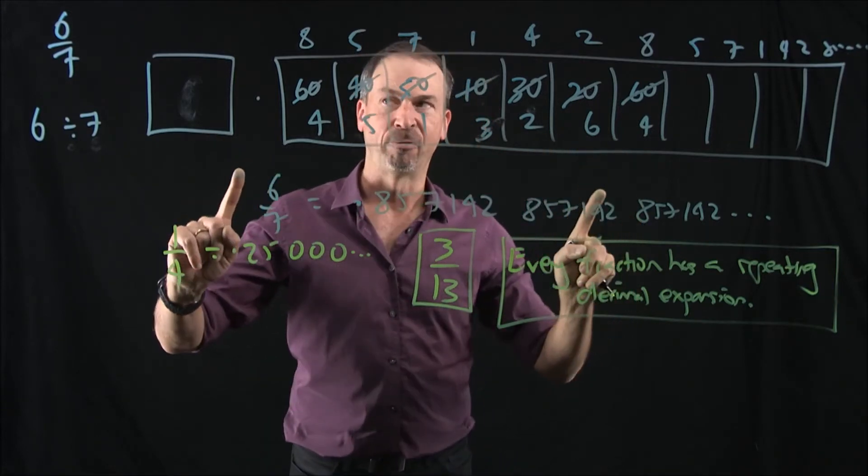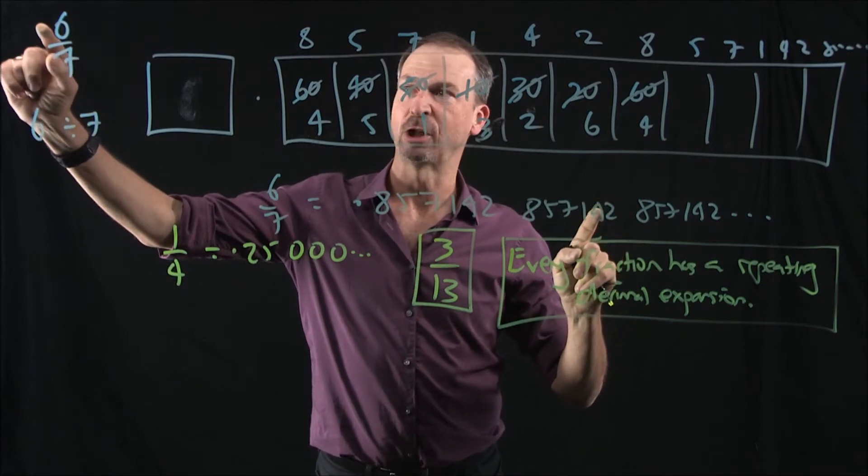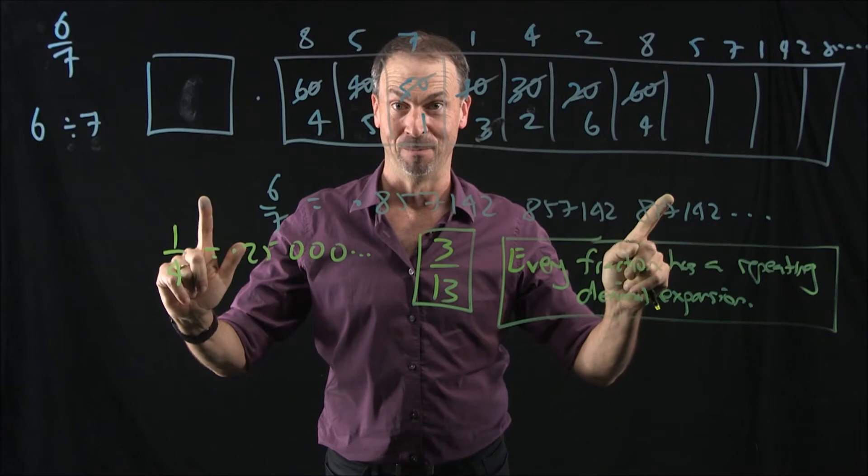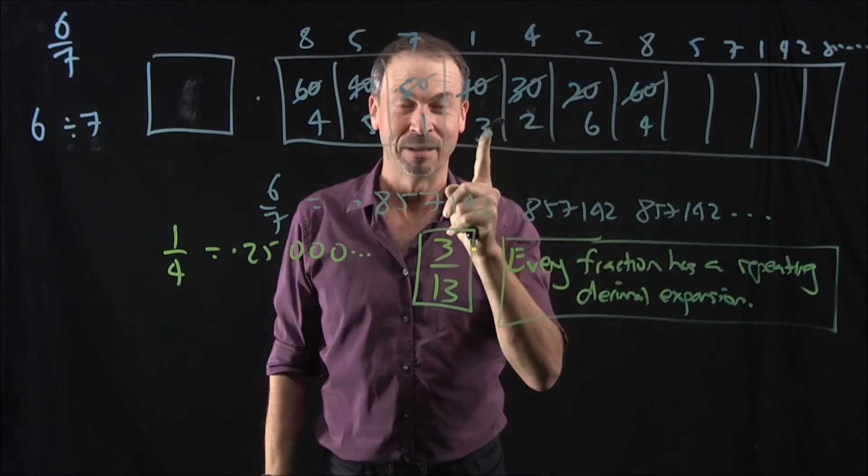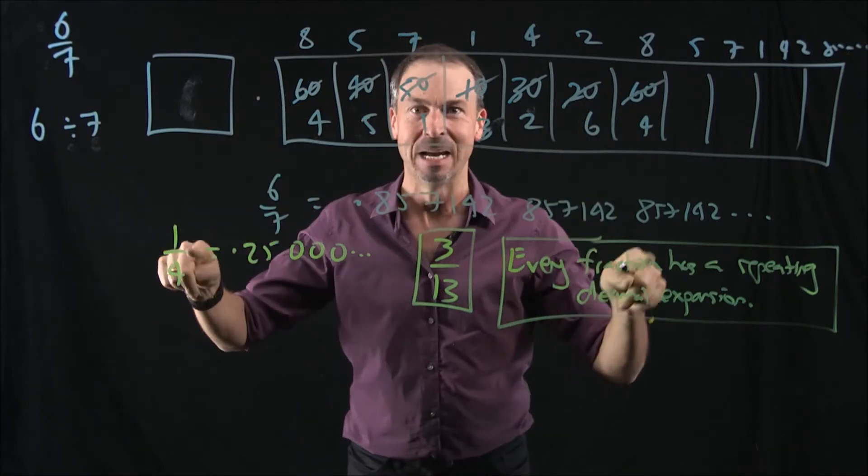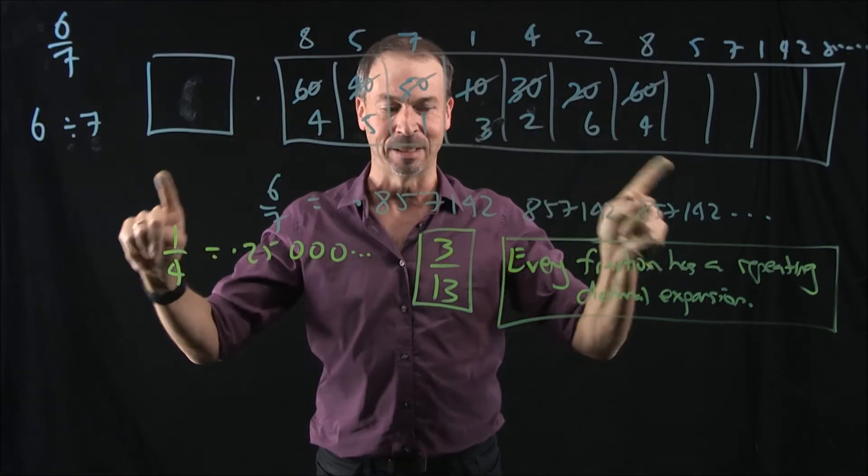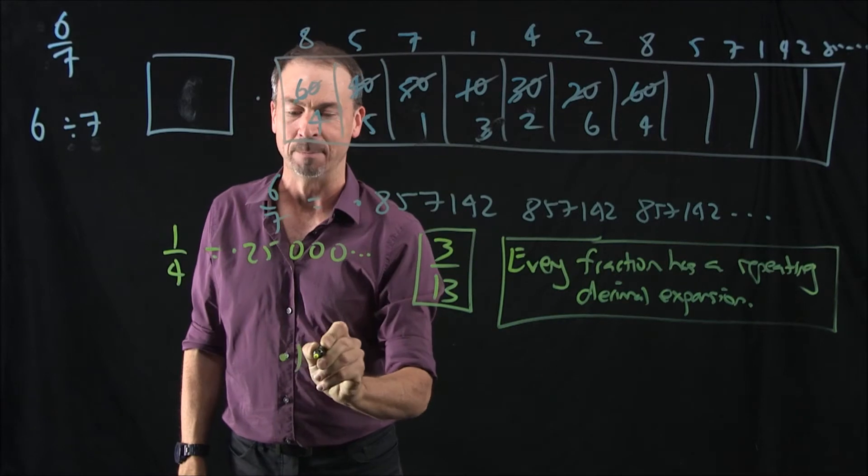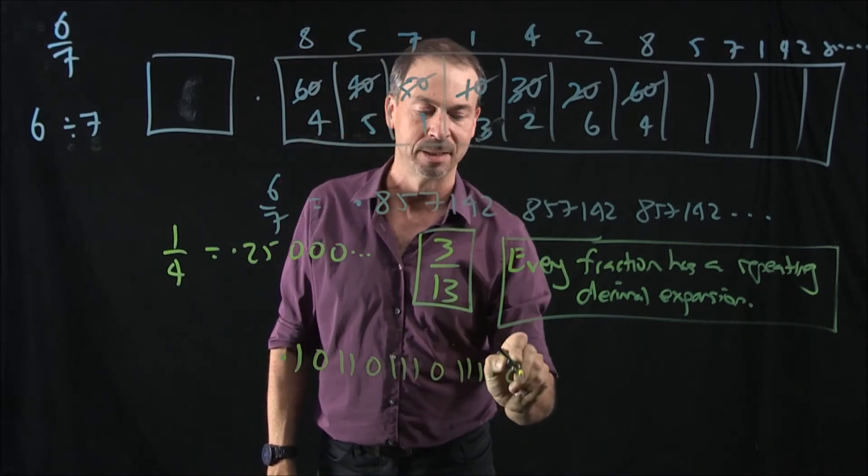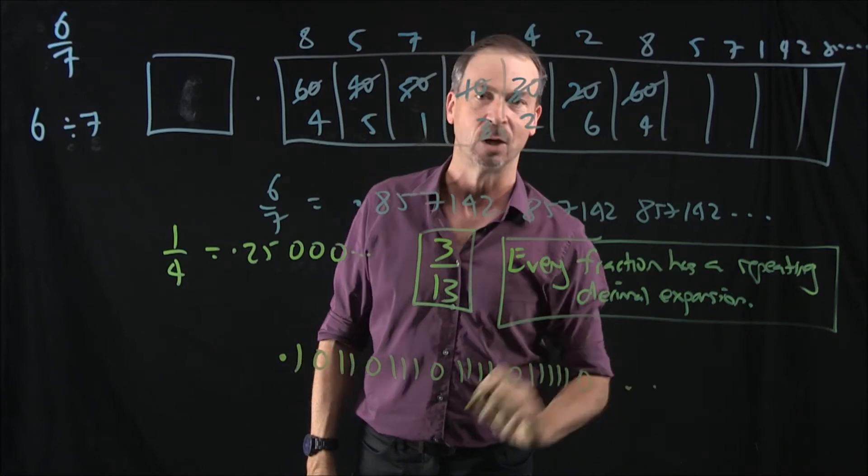Now people often call fractions rational numbers, like a ratio of two whole numbers. So a number that's not a fraction would be called irrational. And I'm going to write down for you right now, an example of an irrational number. We can now prove, at this very moment, that irrational numbers actually do exist. Here's one. It's .101101110111110111110, and so on.